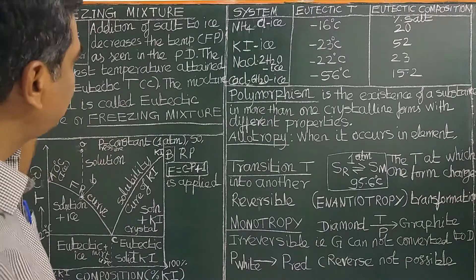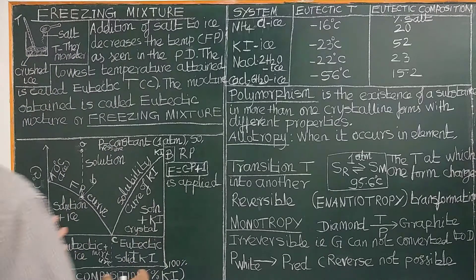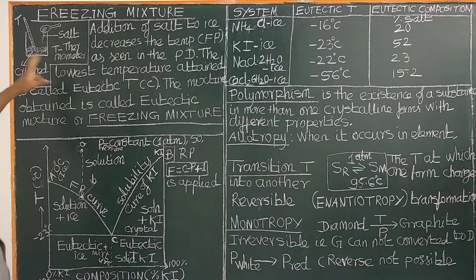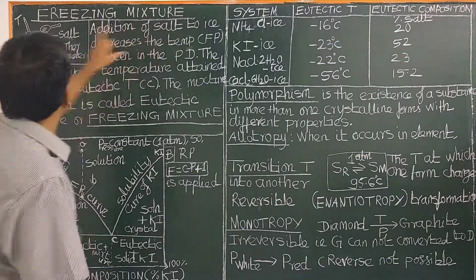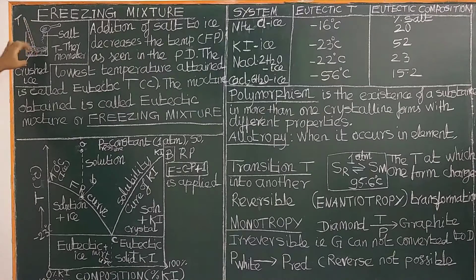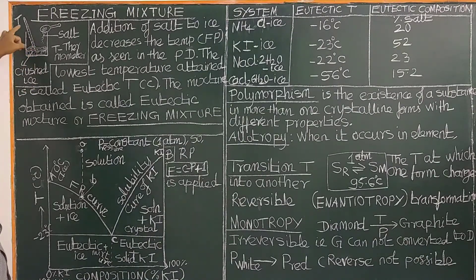In continuation of our previous potassium iodide-water system, we studied the freezing mixture. Similar to that, take crushed ice in a beaker with a thermometer and a glass rod to stir it. Now measure the temperature. Before adding any salt, it is the melting point of ice: 0 degrees Celsius.